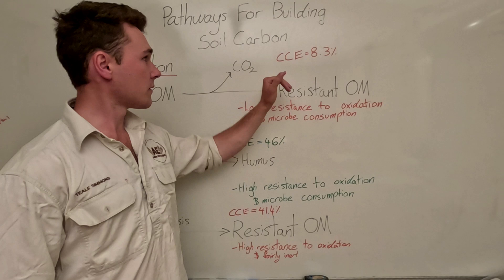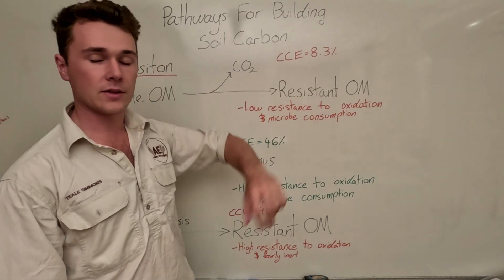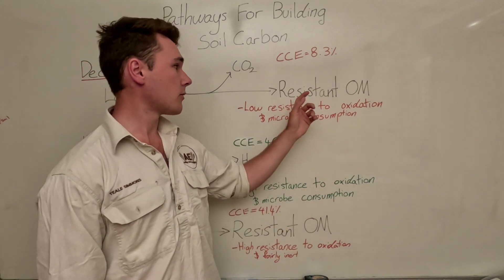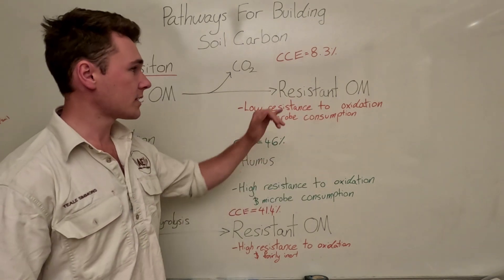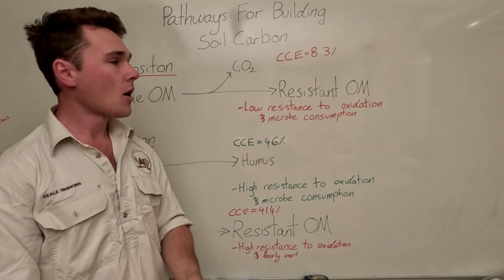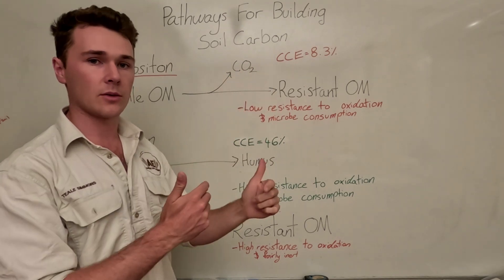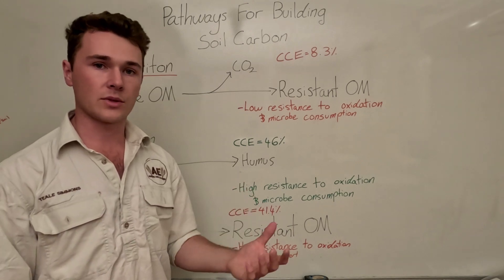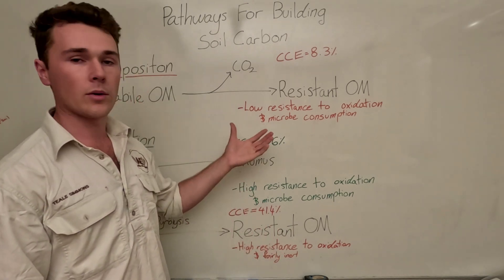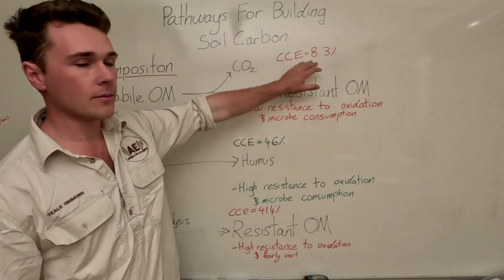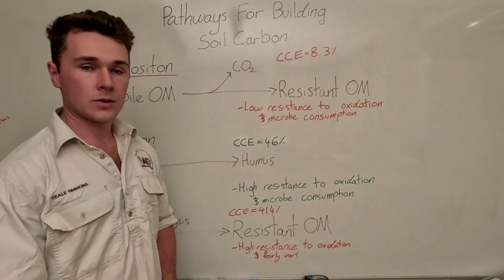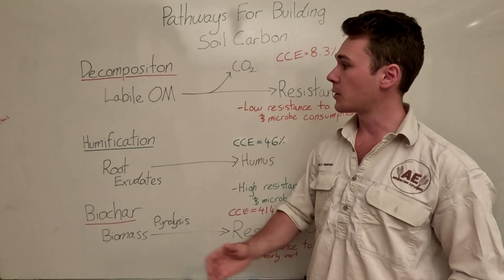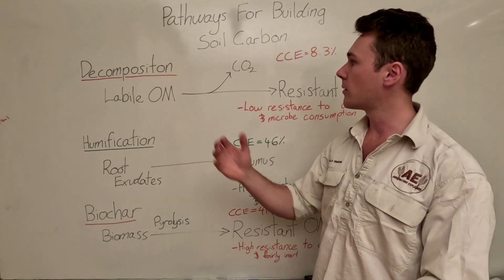However, this whole process has a very low efficiency. When we look at the carbon conversion efficiency (CCE), it has an 8.3 percent efficiency, meaning only 8.3 percent of the carbon we start with in the biomass actually ends up as resistant organic matter. The carbon that doesn't get converted is either tied up in microbial biomass or is released as carbon dioxide back to the atmosphere, to recycle into our plants and back into this process. As we'll discuss in the decomposition pathway video, it's still an important pathway for cycling nutrients and material, but in terms of building soil organic carbon it has a very low efficiency.